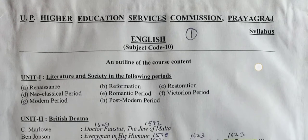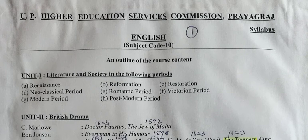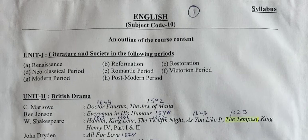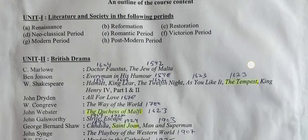So let's go ahead without delaying. This is the latest syllabus of Uttar Pradesh Higher Education Services Commission, subject English, code 10. There are only 10 units. First unit: Literature and Society in the following periods — Renaissance, Reformation, Restoration, Neoclassical period, Romantic period, Victorian period, Modern period, and Post-modern period.